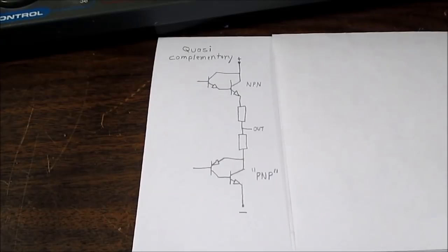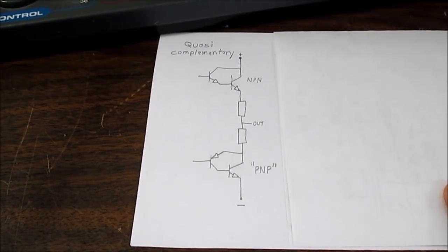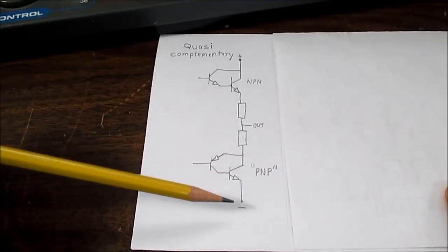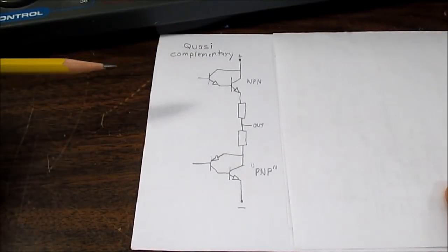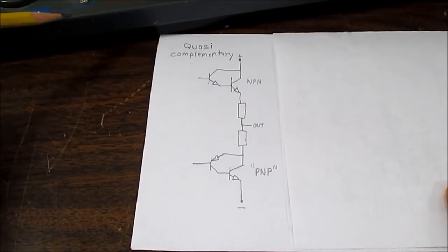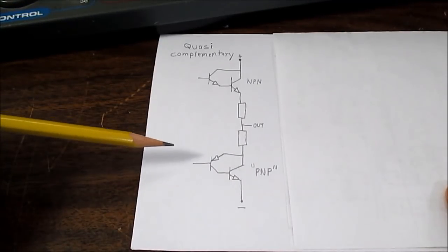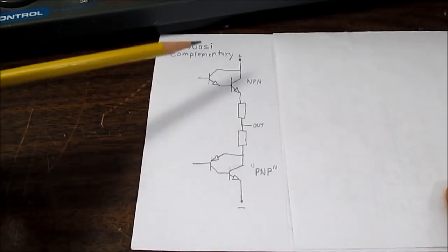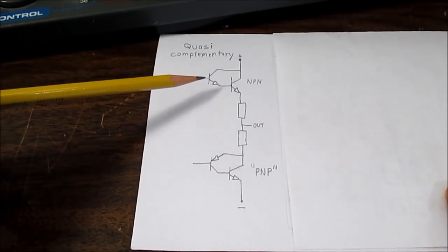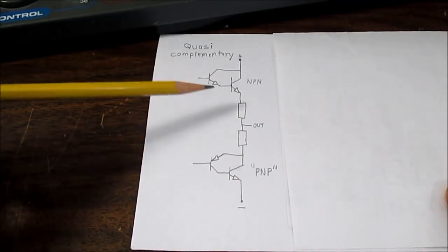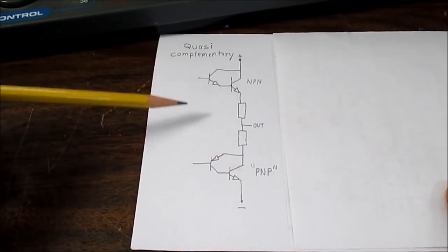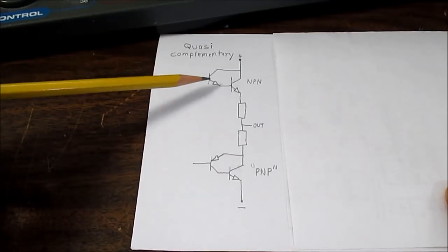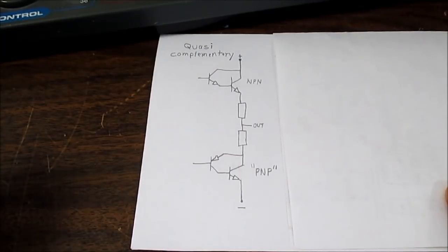So now we're going to move on to audio amplifier output stages. And we'll look at this stage here. This is called a quasi-complementary stage. And it was the first widespread use of the CFP configuration. And also, it used the Darlington configuration. Now this is just a simplified drawing here. I'm not showing all the driving components and everything, just mainly the output stage itself.